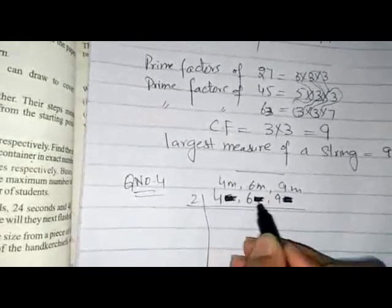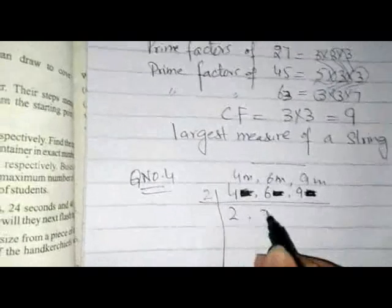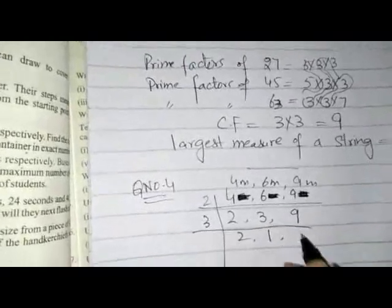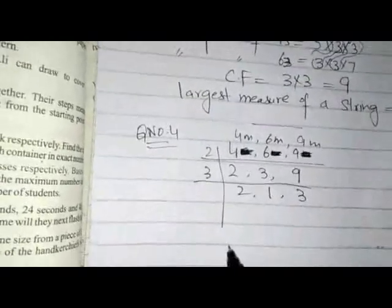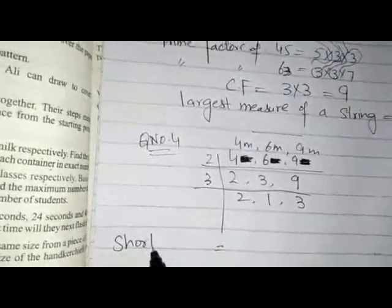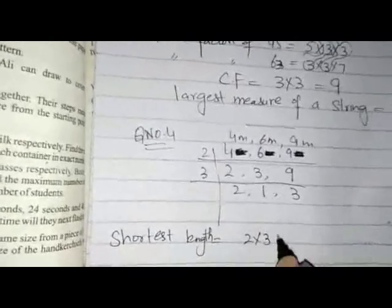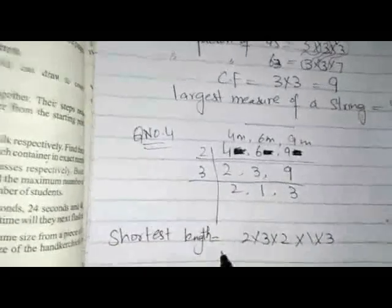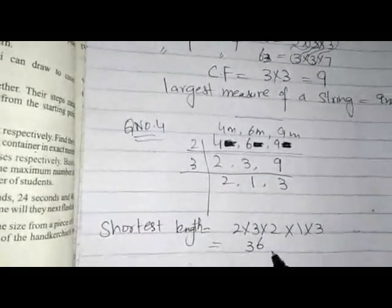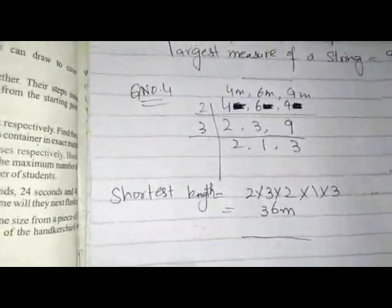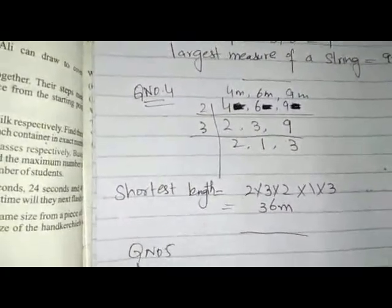I am using the division method for LCM. During the process of LCM we should not use the units — we use only the numerical values. So we have 4, 6, and 9. After applying the LCM method, the shortest length equals 2 × 3 × 2 × 1 × 3 = 36 meters. This is our answer.